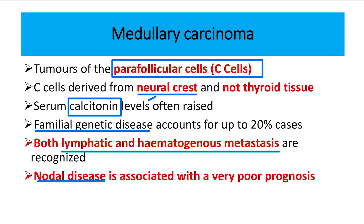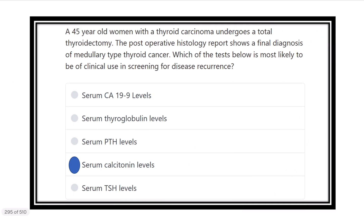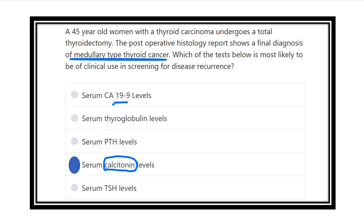The prognostic factor to keep in mind is the serum calcitonin level. In case of medullary type thyroid cancer, we measure the serum calcitonin level. The other option, C99, is usually measured in case of the pancreas and also in case of the colon — C99 is typically measured for the colon and for the pancreas.